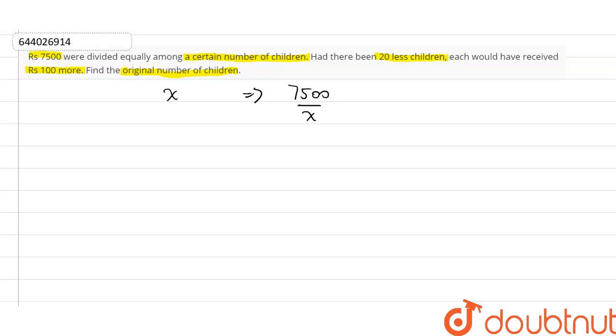Now in the second case it says, if there were 20 less children, that is if the number of children was x-20, then each child would have received 7500 divided by x-20 rupees plus 100.